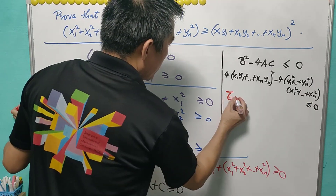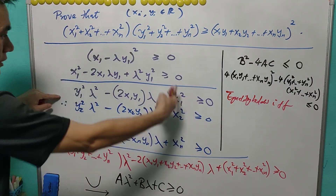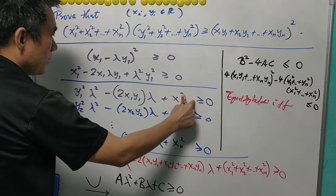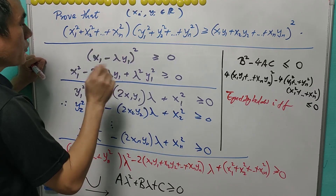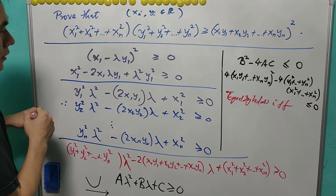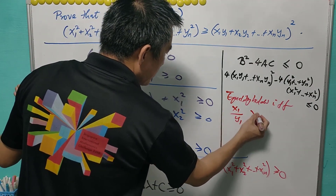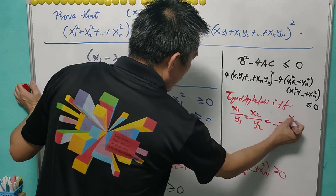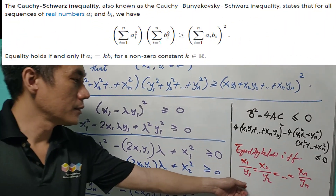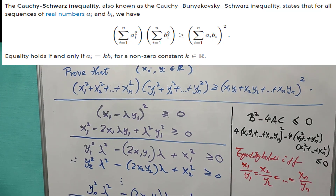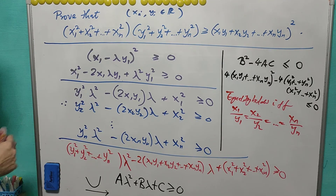We also know that equality holds if and only if each expression (xi − λyi) equals zero, which means λ = x1/y1 = x2/y2 = … = xn/yn. So equality holds if and only if the corresponding ratios are all equal. We will use this result to solve some questions involving the Cauchy inequality.